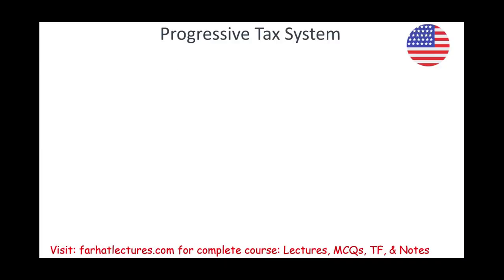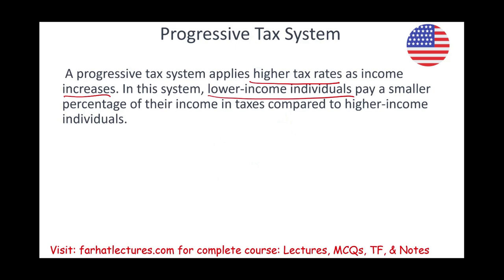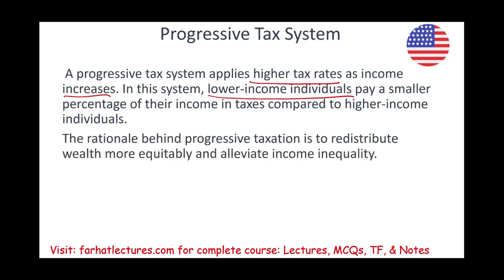Starting with the progressive tax system. The progressive tax system works in the way that the more money you make, the more taxes you pay — the higher your income tax rate. A progressive tax system applies higher tax rates as income increases. Lower income individuals pay a smaller percentage of their income compared to higher income individuals. The rationale behind this system is to redistribute wealth more equally and alleviate income inequality, without putting a lot of pressure on low-income individuals.